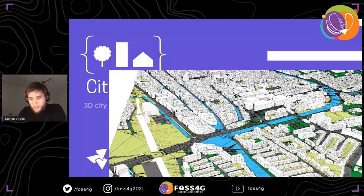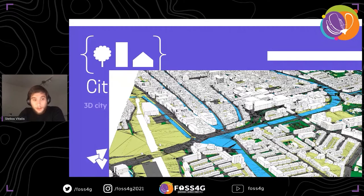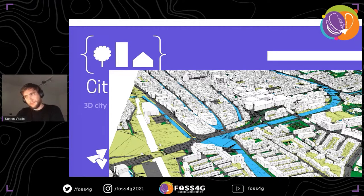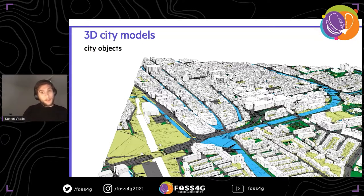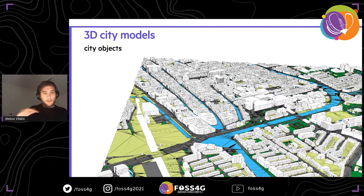So let's start with what 3D City Models are. 3D City Models are a way of representing the urban environment with 3D data. You can think of them as some sort of 3D shapefile, although they are more structured. The main idea is that we standardize certain features — like buildings, roads, vegetation and stuff — and there is a standardized way of how to represent these things.